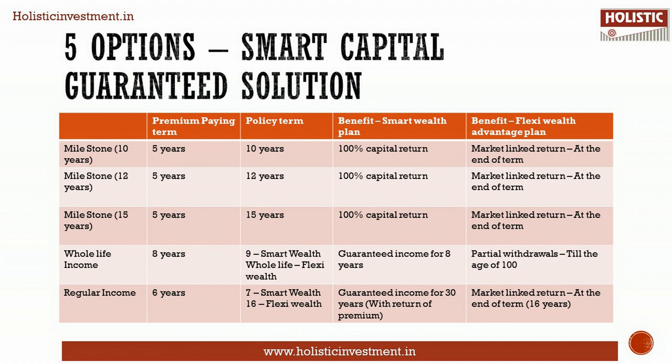Milestone 12 and Milestone 15 are similar to Milestone 10 — only the policy term differs; all other terms are the same. Under the Whole Life option, the premium paying term is 8 years, the policy term for Smart Wealth is 9 years, and for Flexi Wealth Advantage it is whole life. The maturity benefit of Smart Wealth is 100% capital guaranteed through a guaranteed income for 8 years.